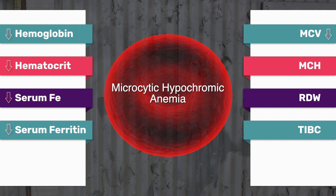The MCV will be low, which represents the size of the red blood cell. The MCH will also be low, which is the color of the red blood cell that contains the hemoglobin.